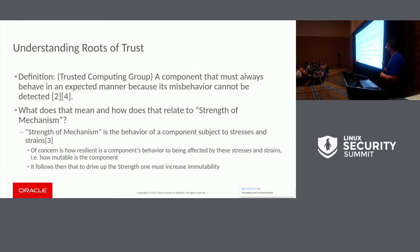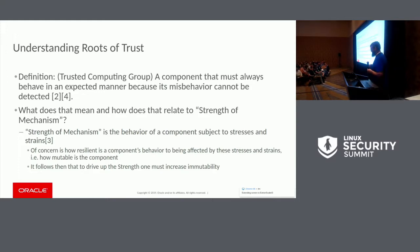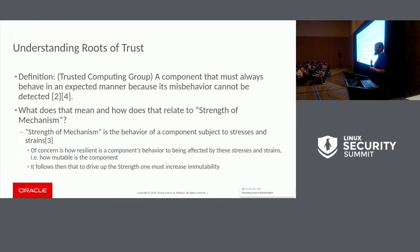According to the TCG, a root of trust is a component that must always behave a certain way, because if it misbehaves, we have no way of detecting that. From a strength of mechanism perspective — a term from mechanics — we worry about whether under stress the mechanism we rely upon will fail or succeed. In this case, we're worried about whether our root of trust will misbehave. The best way to address this in computational systems is to drive those roots of trust to be immutable. Anytime you induce mutability, that is the means by which somebody can create a stress that will cause it to fail.